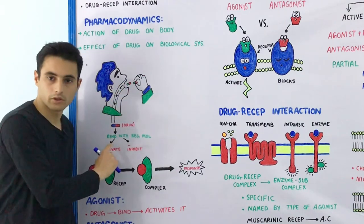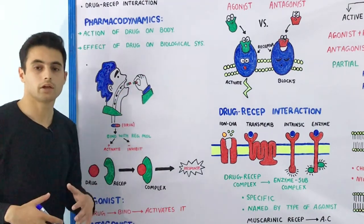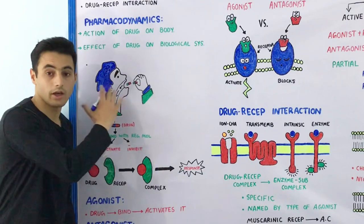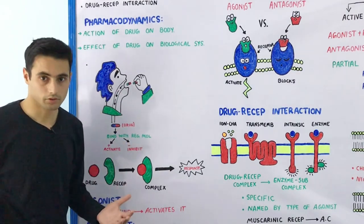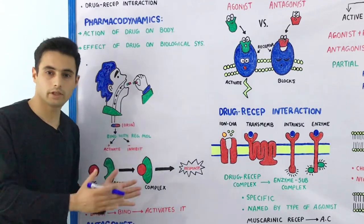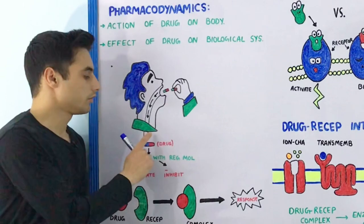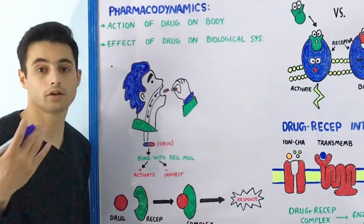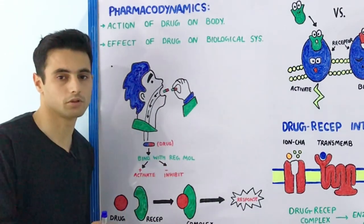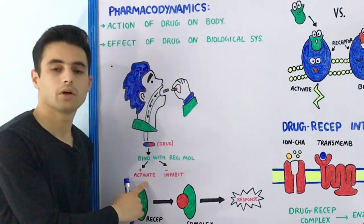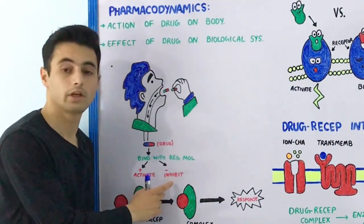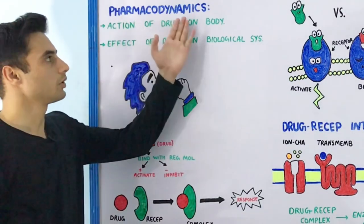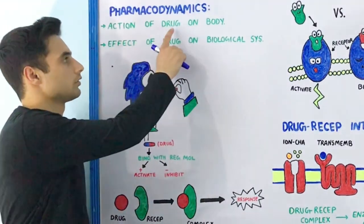When the drug acts on the body, it either activates or inactivates some kind of biochemical or physiological process — this is studied under pharmacodynamics. When your body shows some kind of action on the drug, this is studied under pharmacokinetics. When the drug enters your body after distribution and absorption, it will bind with regulatory molecules called receptors, and either activate or inhibit the physiological and biochemical processes in your body.